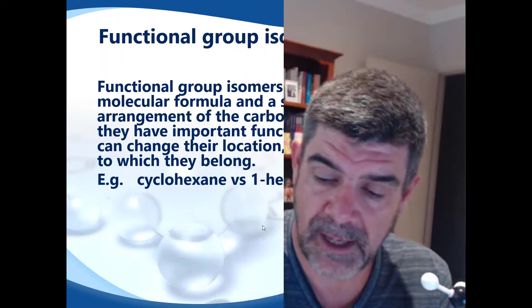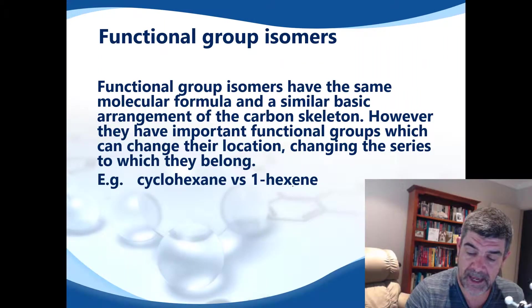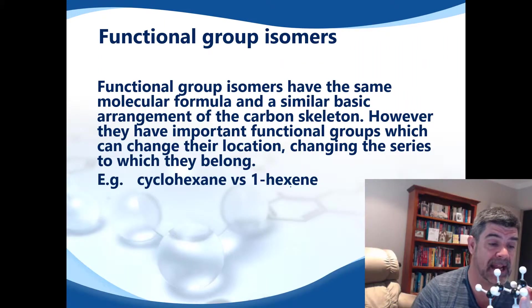Hexane has 6 carbons and it has 12 hydrogens. So the molecular formula for hex-1-ene — you can see the double bond is on the end carbon.